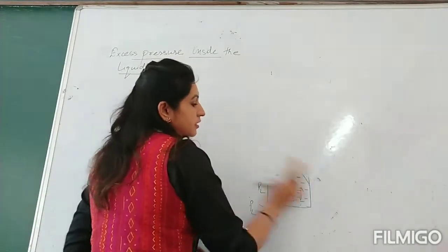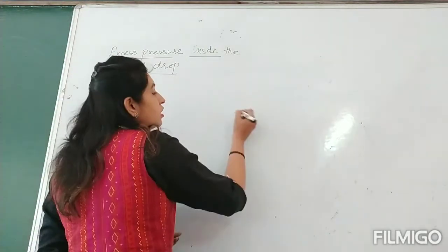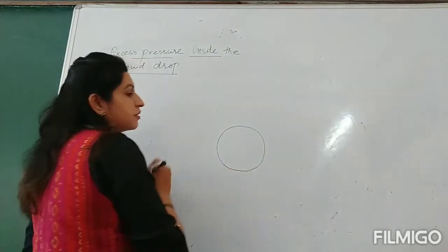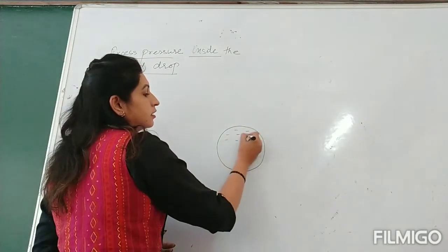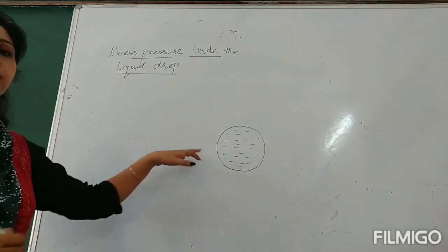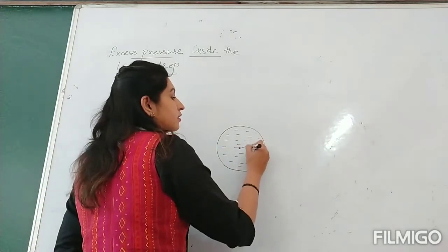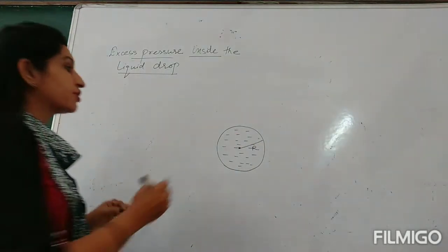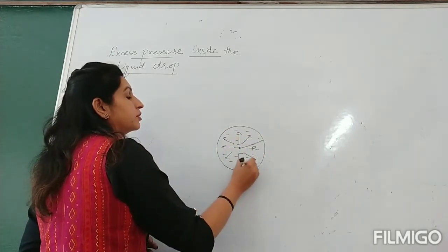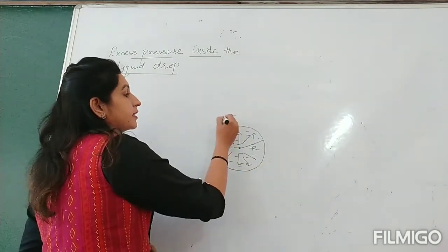Here we consider a spherical liquid drop — obviously spherical because a sphere has minimum surface area. This spherical liquid drop has excess pressure inside it because of its curved surface. Suppose initially its radius is R. Due to the excess pressure inside, there will be pressure acting in all directions perpendicular to the surface. Due to this excess pressure P, suppose the drop expands its radius by delta r.